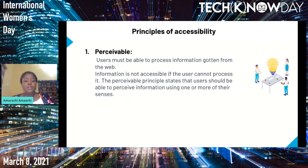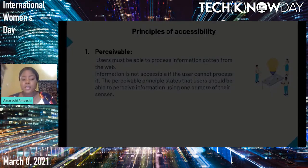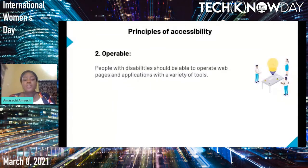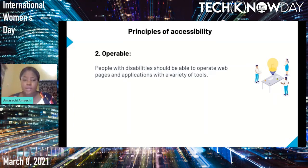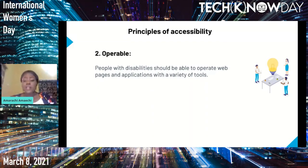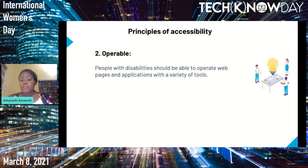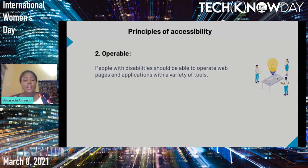But if captions are not provided, I'll only hear the Chinese, which I may not be able to understand. So when you're building, make sure your website or application is perceivable to all users. The second principle is operable: people with disabilities should be able to operate web pages and applications with a variety of tools. If a user cannot operate your website with a mouse, keyboard-based operation should be implemented. Users should be able to control all elements no matter the tool or assistive technology they are using.